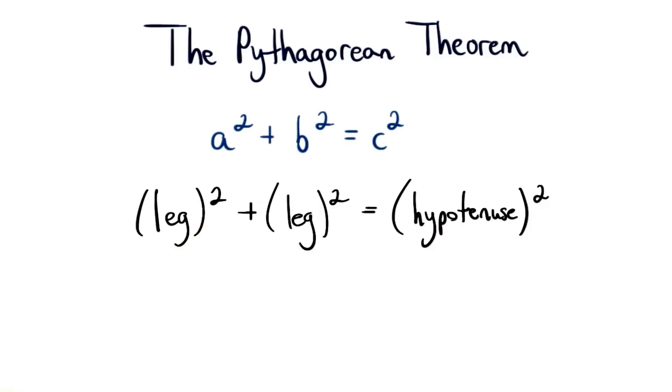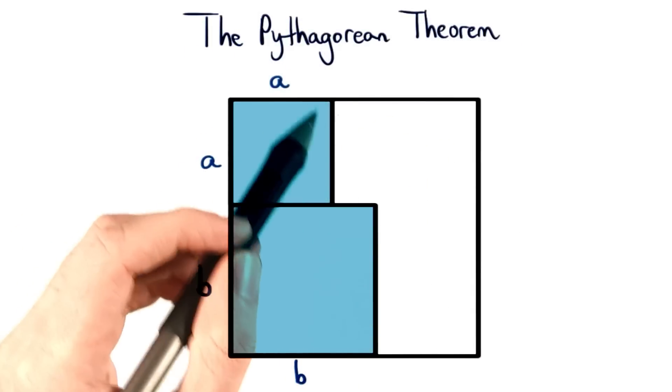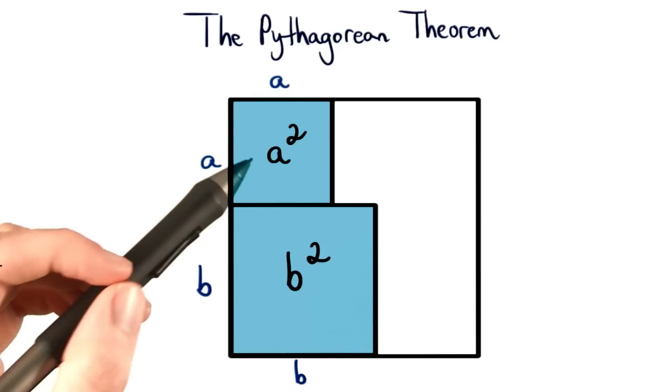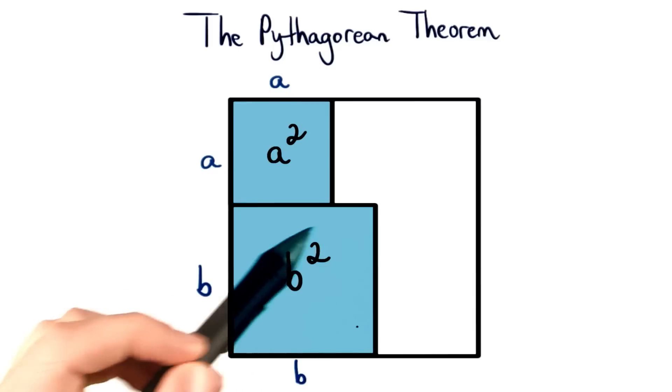Well, let's see this by starting off with a square. Here's one large square, and then this small square has a side length of a, and this larger square has a side length of b. So we know that the area of this square is a squared, and the area of this square is b squared.